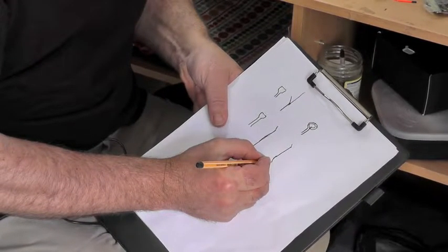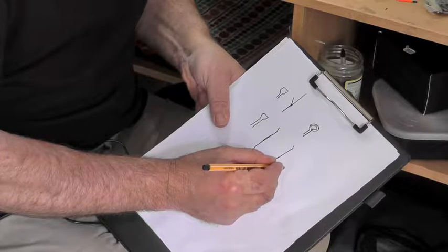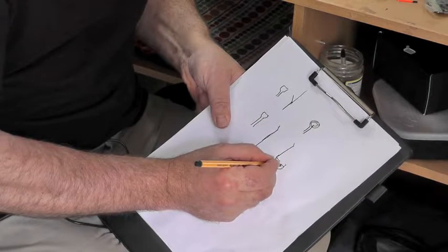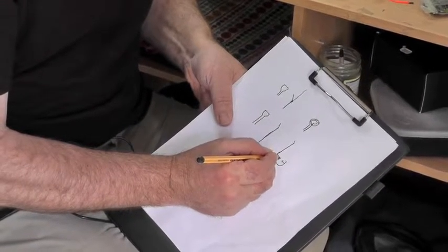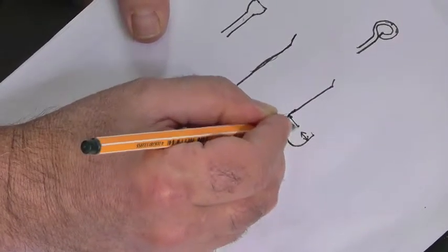If I draw a standard round bend here, just to show you, the gape is the gap between the shank and the upturn point of the hook there. So this here is the gape. From here to here, all of this is the gape.